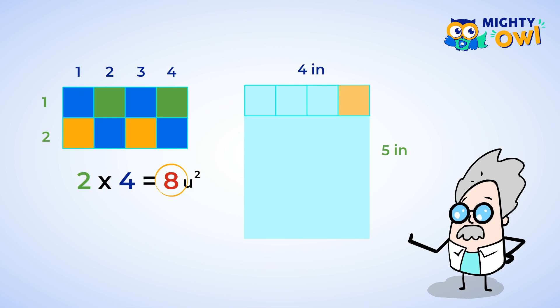Now remember, we already have one square in the corner. So we really only have to make four more to have five altogether. And let's fill in the rest of our rectangle.